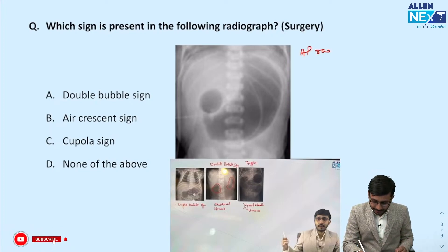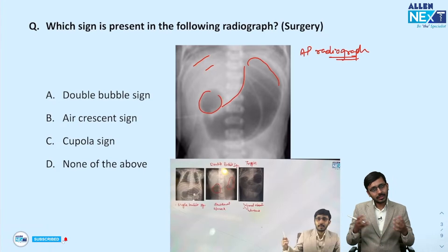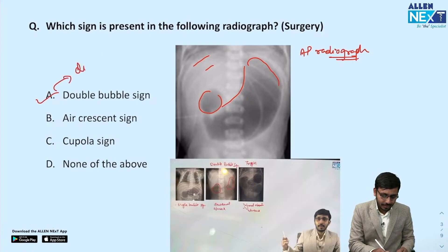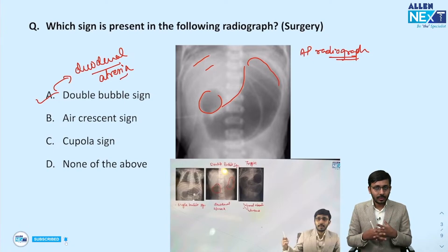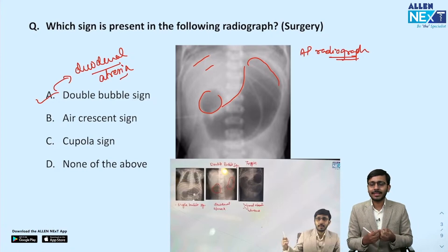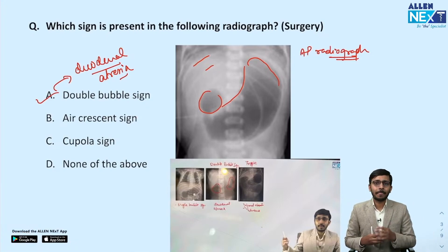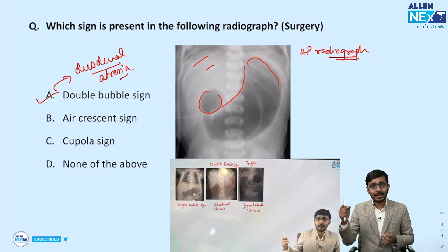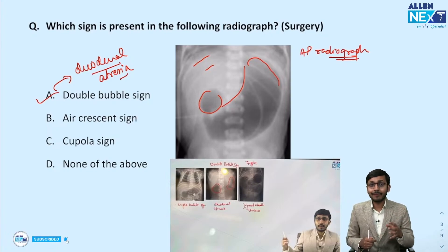The second question: which sign is present in the following radiograph? This is an AP radiograph of the abdomen of a child — we can see thin ribs. There are two bubbles seen here, so this is the double bubble sign, seen in cases of duodenal atresia. Clinical cues are important: if the question mentions bilious vomiting, then duodenal atresia is a likely possibility. But if it mentions non-bilious vomiting, the obstruction is proximal to the ampulla of Vater, and the answer would be CHPS — congenital hypertrophic pyloric stenosis — which has a single bubble.